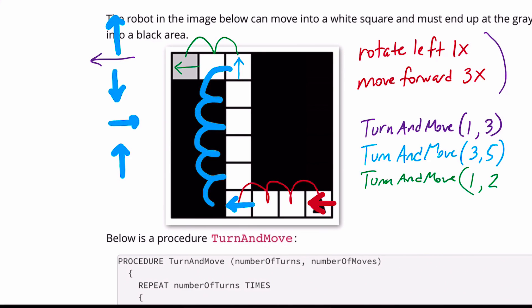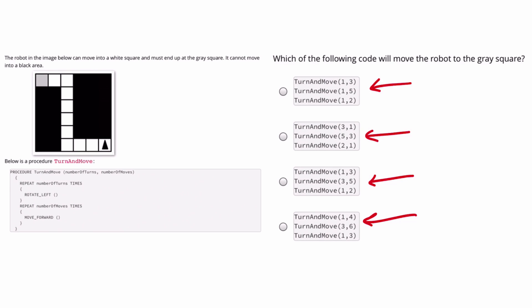So now we have to find this in the answer choices. So based on everything we just went over, I believe the answer has to be this third one, where turn and move one, comma, three is the first line. Turn and move three, comma, five is the second line based on everything we went over. And obviously turn and move one, comma, two must be the last.